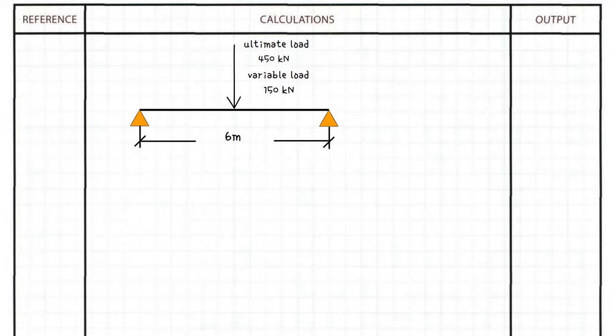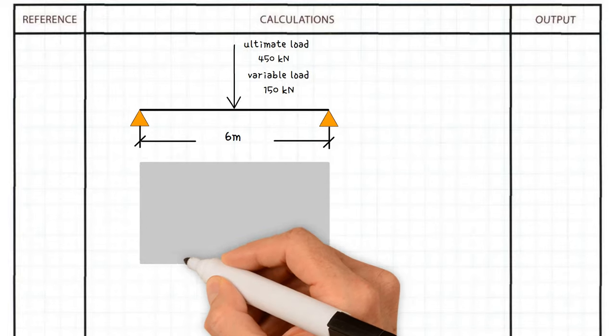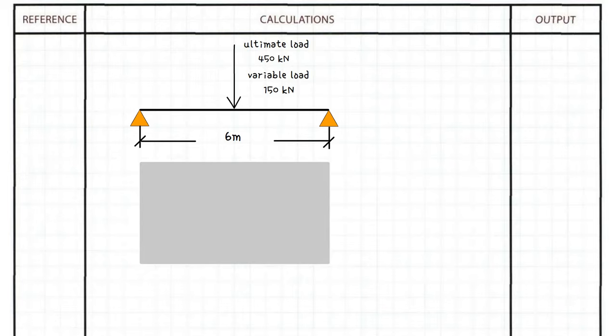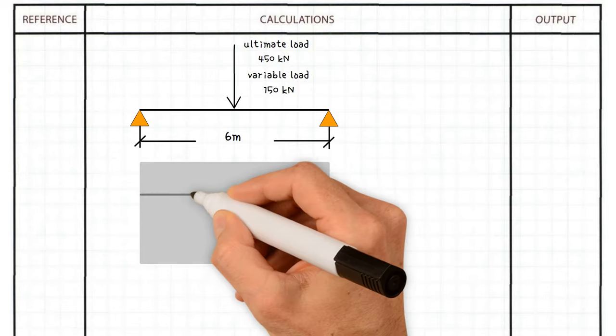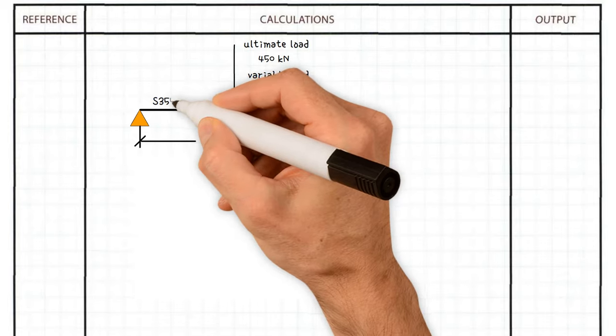The floor structure consists of one-way spanning precast concrete planks with a screed and tiled finish. These planks span parallel to the steel beam and hence do not provide lateral restraint. Determine what size of beam is required to support this load, assuming the steel grade to be S355.